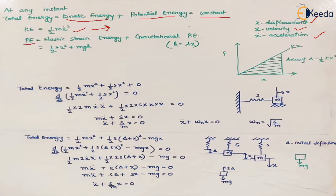Now, potential energy has two factors. The first is gravitational potential energy, which comes into play when the system is in a vertical position. When we consider horizontal movement of mass, gravitational potential energy is not taken into consideration. Gravitational potential energy is mgh, where h is the height through which the body is displaced. In this case displacement is denoted by x, so we can say h is dependent on x: let h equal lambda times x.